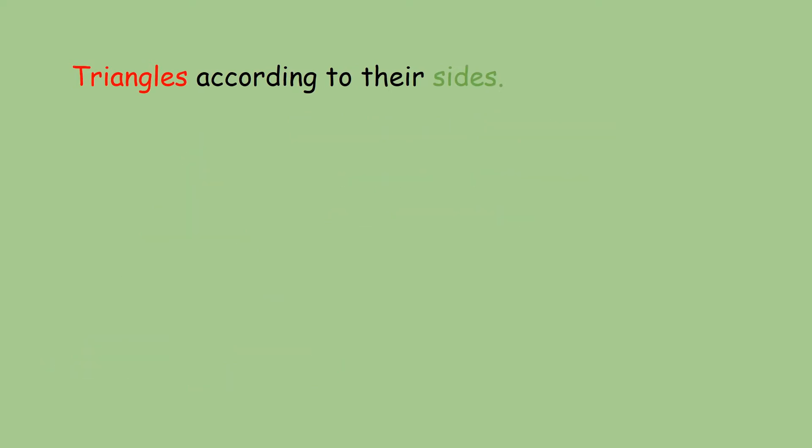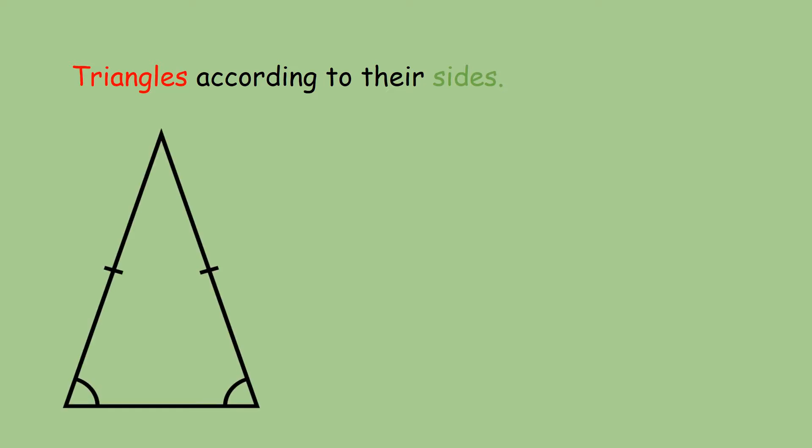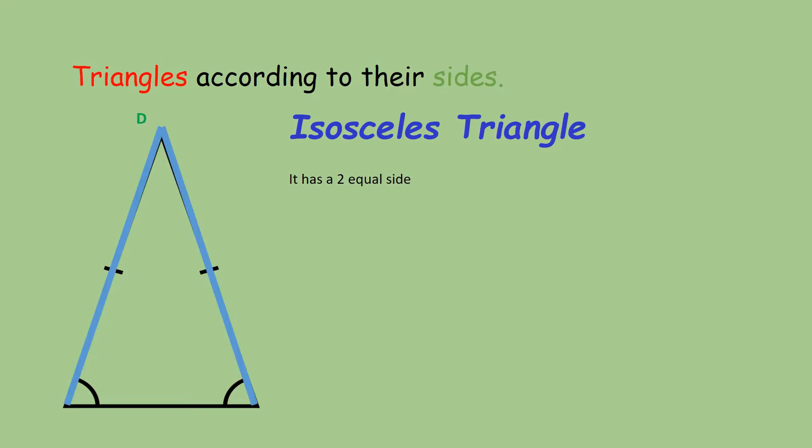The next classification of a triangle according to their sides is what we call an isosceles triangle. This picture is an example of an isosceles triangle because it has two equal sides. Therefore,